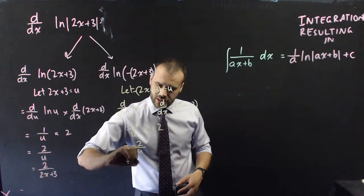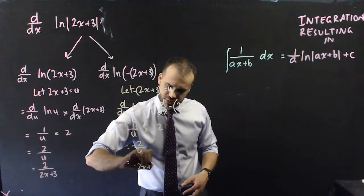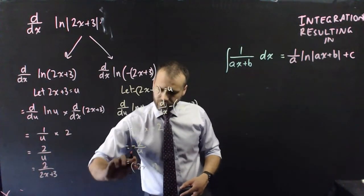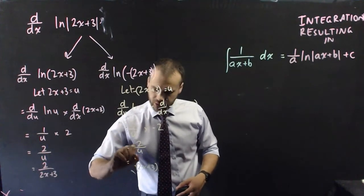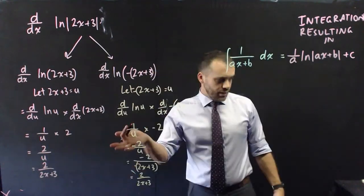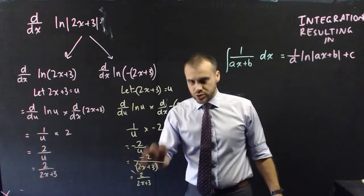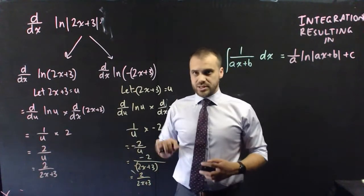But in actual fact, our u here is negative 2x plus 3, put the bracket in the right spot, over negative 2. And now those negatives top and bottom cancel out to give 2 over 2x plus 3, which is the same as that.